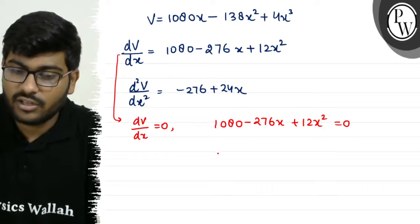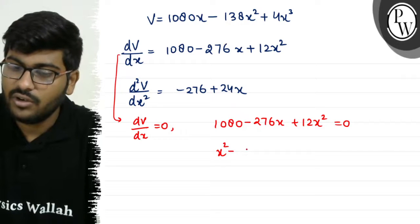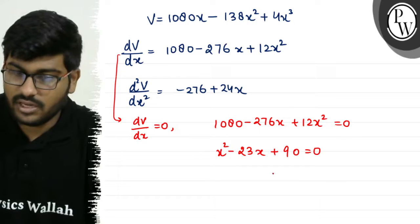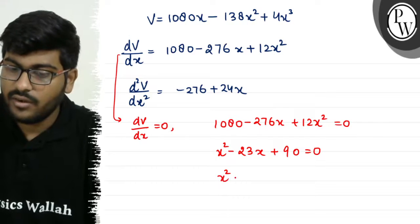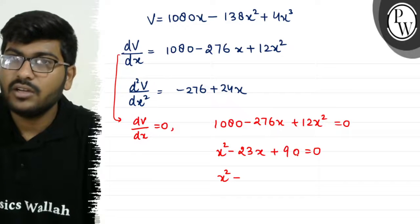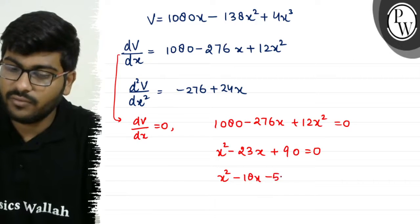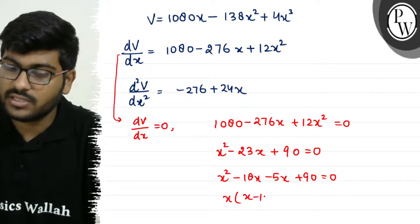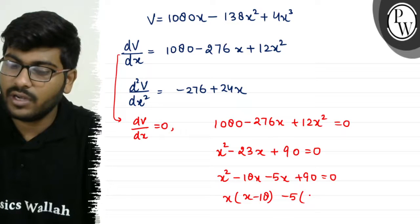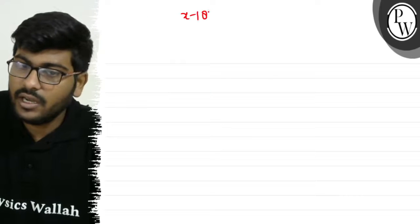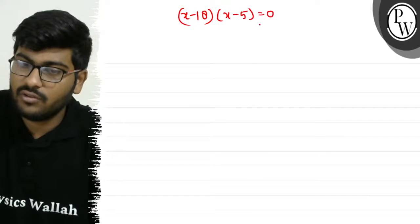Dividing by 12: x² minus 23x plus 90 equals 0. Factoring: x² minus 18x minus 5x plus 90 equals 0, so (x - 18)(x - 5) equals 0. This gives us two values: x equals 18 and x equals 5.